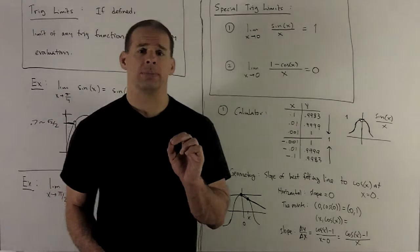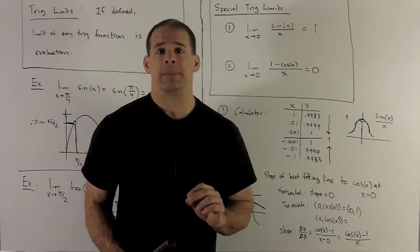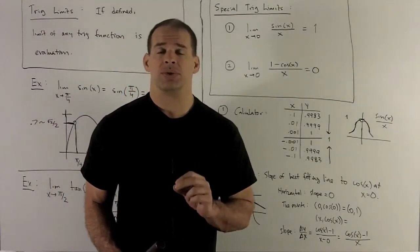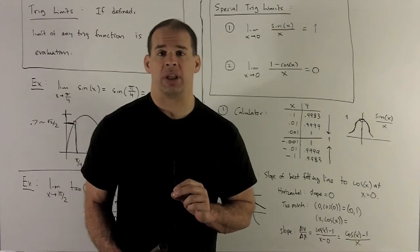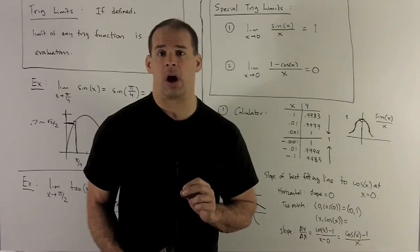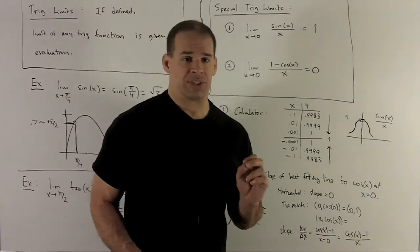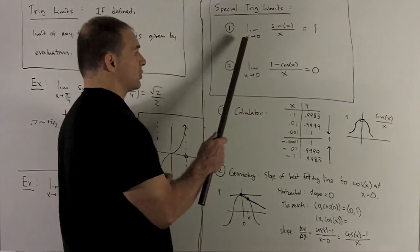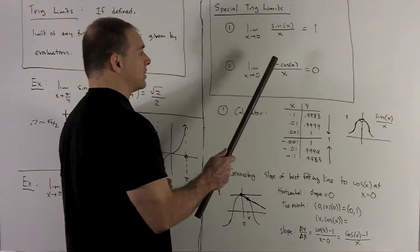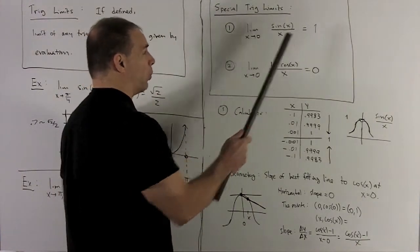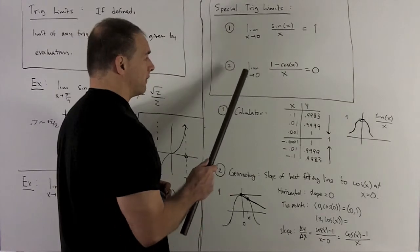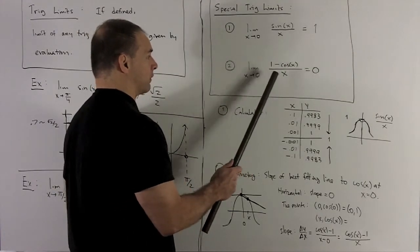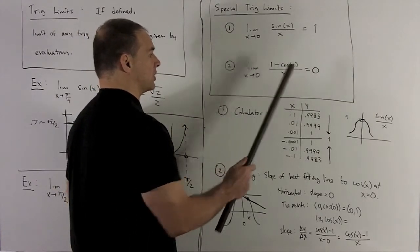For straightforward trig functions, you just evaluate and see what comes out. Now we're going to use two very special limits involving trig functions: the limit as x goes to 0 of sin(x)/x equals 1, and the limit as x goes to 0 of (1 − cos(x))/x equals 0.